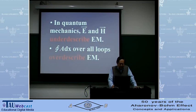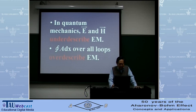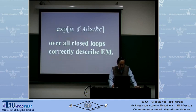The revelation is that in quantum mechanics, E and H under-describe electromagnetism. Only knowing E and H is not enough — even when E and H are both zero, there is still possible electromagnetic effect. On the other hand, if you take the loop integral of the vector potential over all loops, that over-describes electromagnetism. You do not need that much information to realize all the electromagnetic effects. It is the expression integrated over all closed loops that correctly describes the electromagnetic effects.